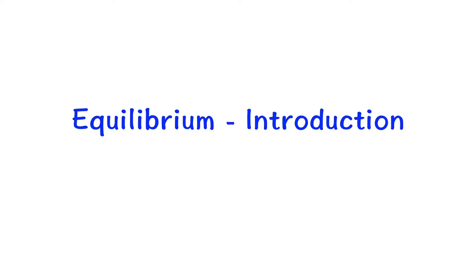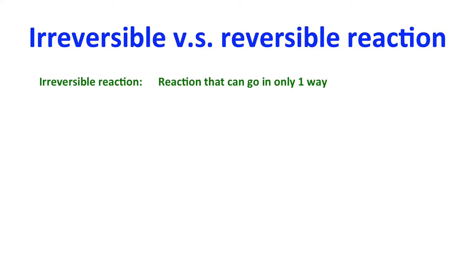This is the starting of equilibrium. We are going to introduce two terms first. The first one is irreversible reaction and the second one is reversible reaction. For the irreversible reaction, we have learned a lot so far. They are reactions that can go only one way.